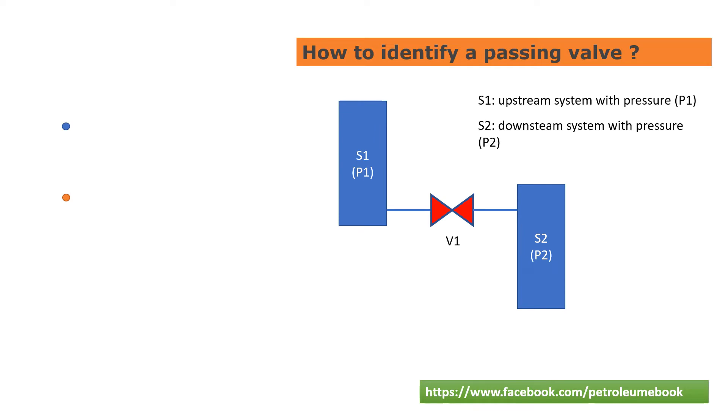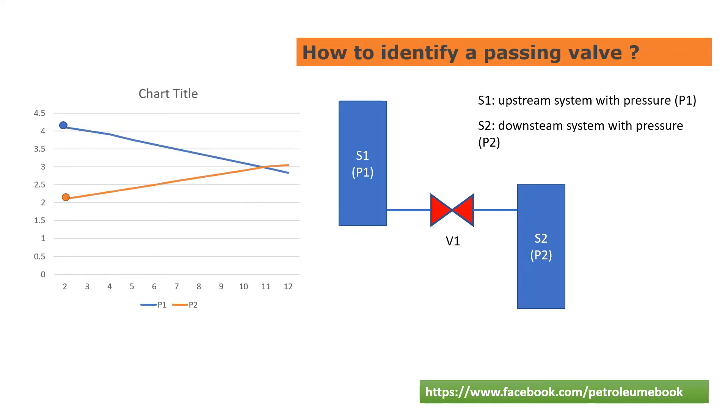The first example is with the systems S1 and S2. After isolating these systems, we see the pressure of S2 increase and S1 decrease day by day. We can conclude that V1 is passing.